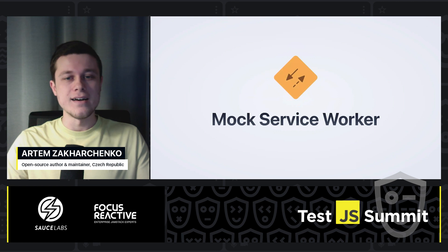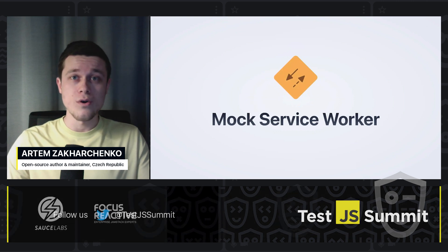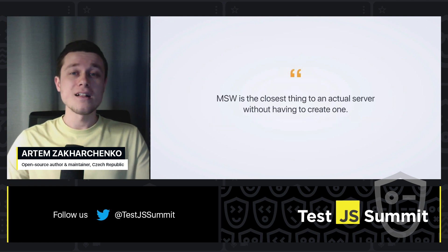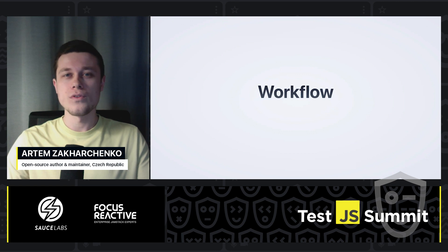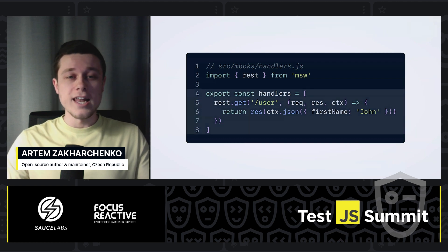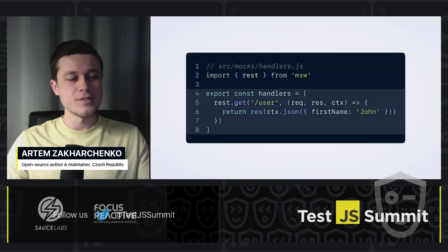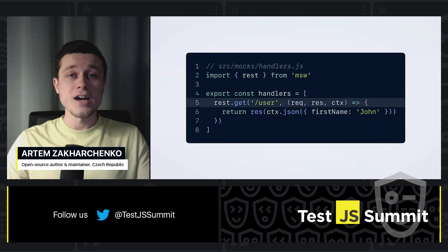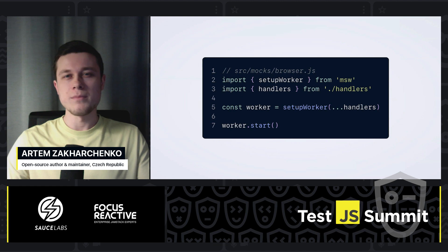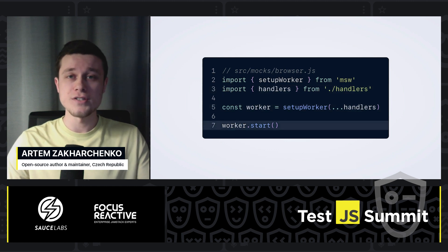Despite those challenges, I like the idea. A couple of years back, I wrote the library called Mock Service Worker, or MSW for short. It leverages the ability of the service worker to intercept requests and does that gracefully. MSW is the closest thing to an actual server without having to create one — and this is thanks to service workers. Let me show you how the workflow with the library looks like. First, I'm going to tell the library which requests to capture, and I'm writing things called request handlers — functions that describe request information and which response to produce. Here, I'm targeting a REST API request, which is a GET request to the /user endpoint, and I'm producing this mocked response — a JSON body with firstName equals John. Once I'm done with the handlers and I've described all the server behavior, I'm creating a worker by calling setupWorker and providing my handlers, then starting this worker, which registers and activates the worker in the browser.